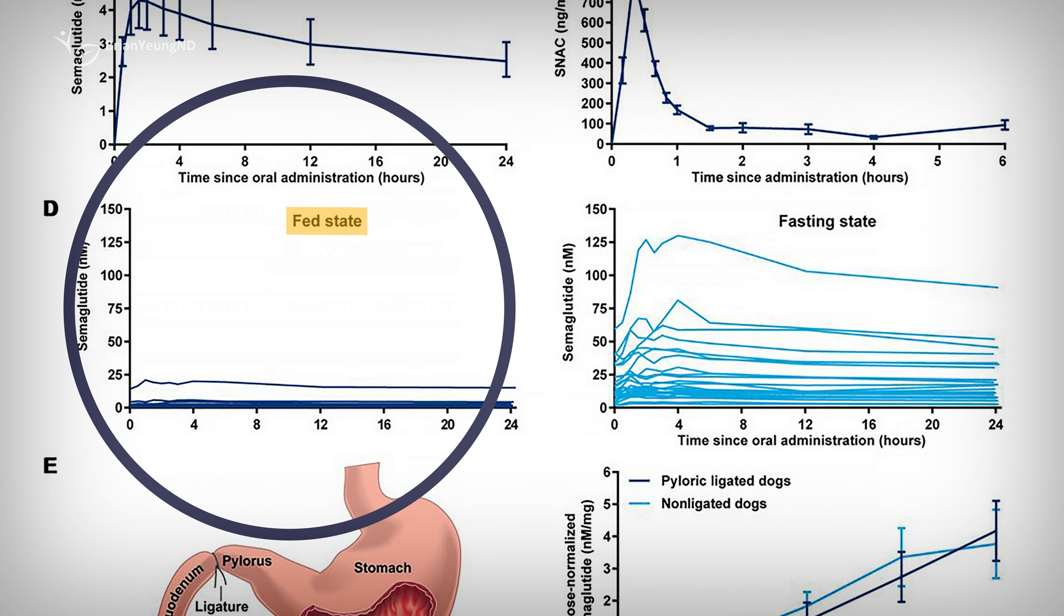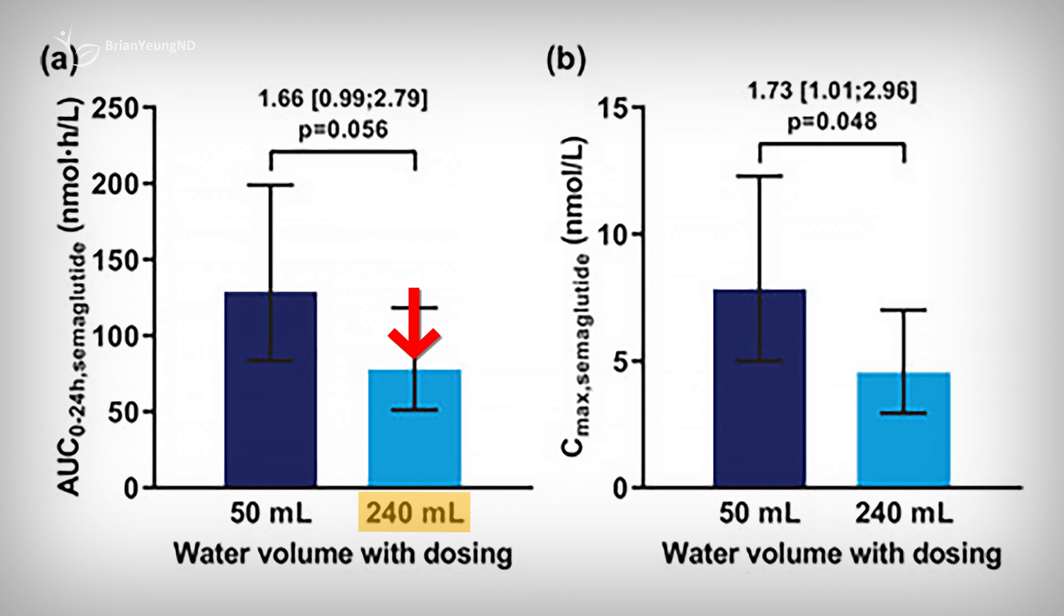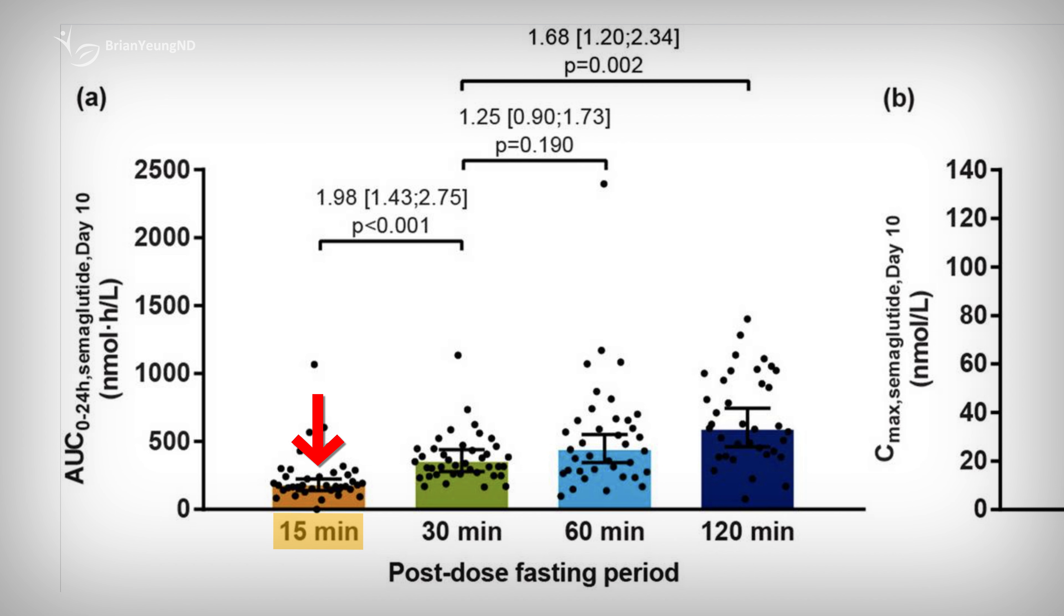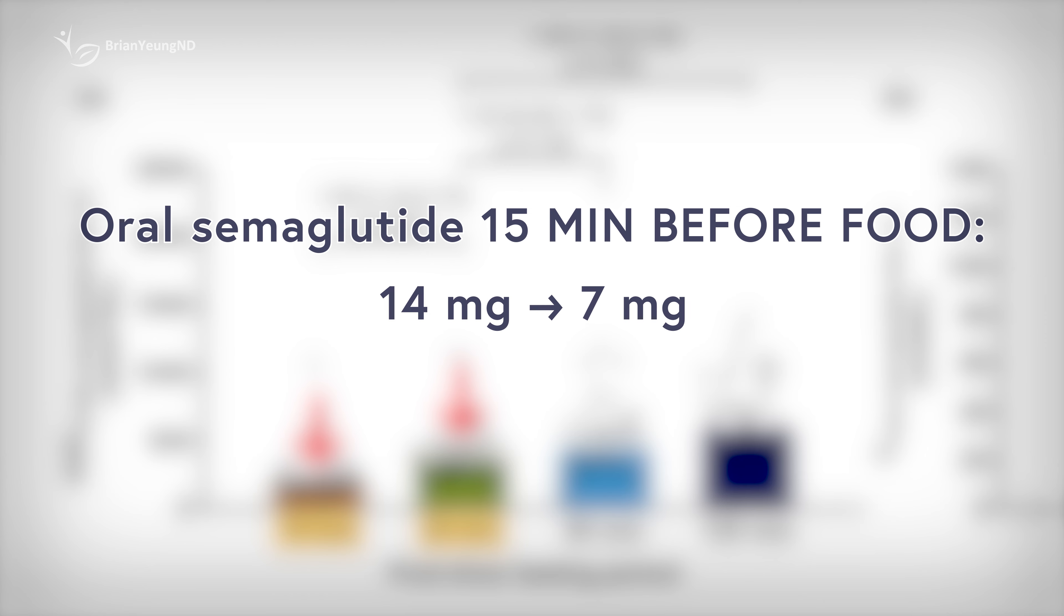To sum it all up, the absorption of oral semaglutide is significantly affected by how and when you take it. If you take it with food, absorption is almost completely blocked. Taking it with a full glass of water instead of the recommended half a glass can reduce absorption by up to 40%, making a 14 milligram dose feel more like 8 milligrams or a 50 milligram dose feel more like 30 milligrams. If you wait only 15 minutes instead of the recommended 30 minutes before eating, absorption can be cut in half. So a 14 milligram dose would feel more like 7 milligrams and a 50 milligram dose more like 25 milligrams.